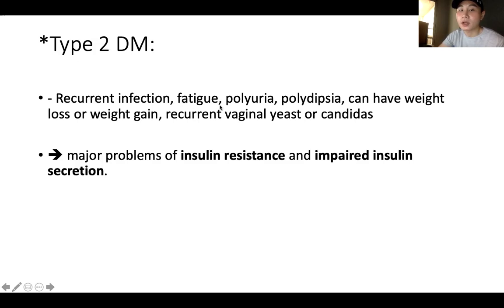Signs and symptoms of type 2 diabetes include recurrent infections, fatigue, polyuria, polydipsia, weight loss or weight gain, and recurrent vaginal yeast infections or candidiasis. Type 2 patients often have a lower immune system, which is why they get recurrent infections. If a patient comes in with a history of recurrent infection and high blood sugar, we can suspect they may have type 2 diabetes or prediabetes.